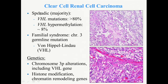There is a familial component of clear cell renal cell carcinoma characterized by chromosome 3 germline mutation — these are the patients with Von Hippel-Lindau. Genetically, they have chromosome 3p alteration, and they have histone modification and chromatin remodeling genes that are altered.